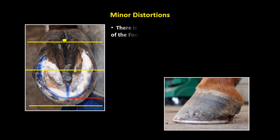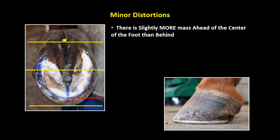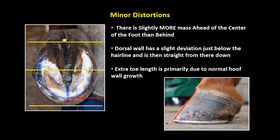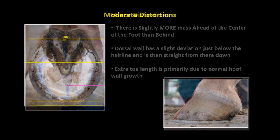Minor distortions: there is slightly more mass ahead of the center of the foot than behind. The dorsal wall has a slight deviation just below the hairline and is then straight from there down. Extra toe length is primarily due to normal hoof wall growth.